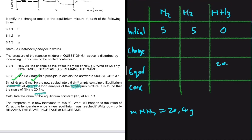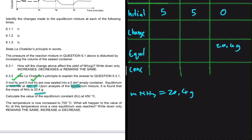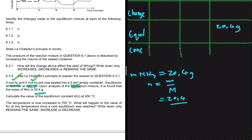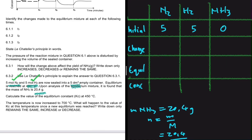We are told that the mass of ammonia at equilibrium is 20.4 grams, but we actually need the number of moles, not the mass. So we have to convert that mass to number of moles: moles equals mass divided by molar mass. That is 20.4 divided by the molar mass of NH₃, which is 14 for nitrogen plus 3 for three hydrogens.